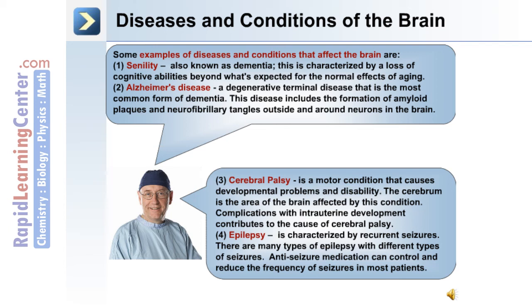Complications with intrauterine development contribute to the cause of cerebral palsy. Number four: epilepsy, which is characterized by recurrent seizures. There are many types of epilepsy with different types of seizures. Anti-seizure medication can control and reduce the frequency of seizures in most patients.